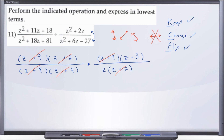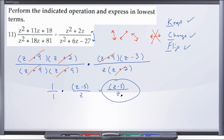Let's see what we're left with. In the left fraction, everything canceled, so we have one over one. On the right, we're left with (z minus 3) in the numerator and z in the denominator. So one times (z minus 3) is just (z minus 3), and one times z is just z. The final answer is (z minus 3) over z. You don't have to include the parentheses if you don't want to. That was number 11 — see you at number 12!